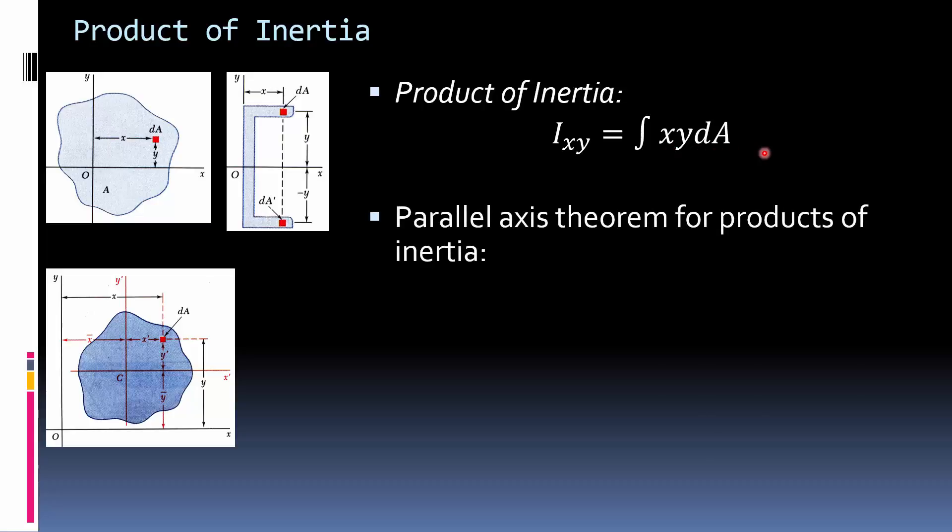Okay, so the parallel axis theorem is going to work out in a similar way. Now, Ixy is Ixy bar, so the Ixy at the centroid, plus x bar, y bar times area. So instead of just the distance squared times the area, it's the distance from each axis times each other.